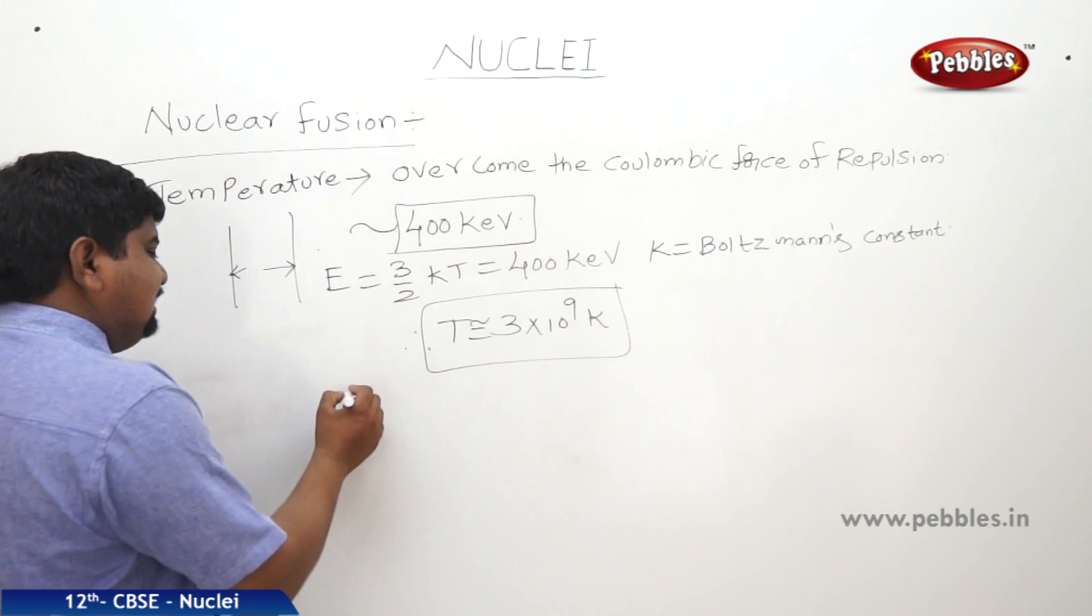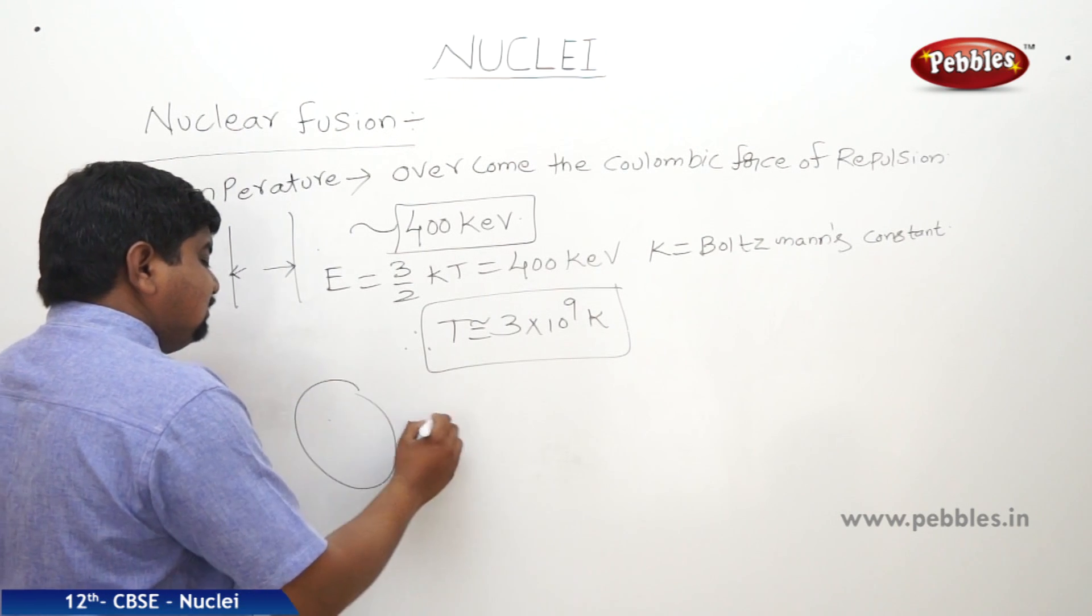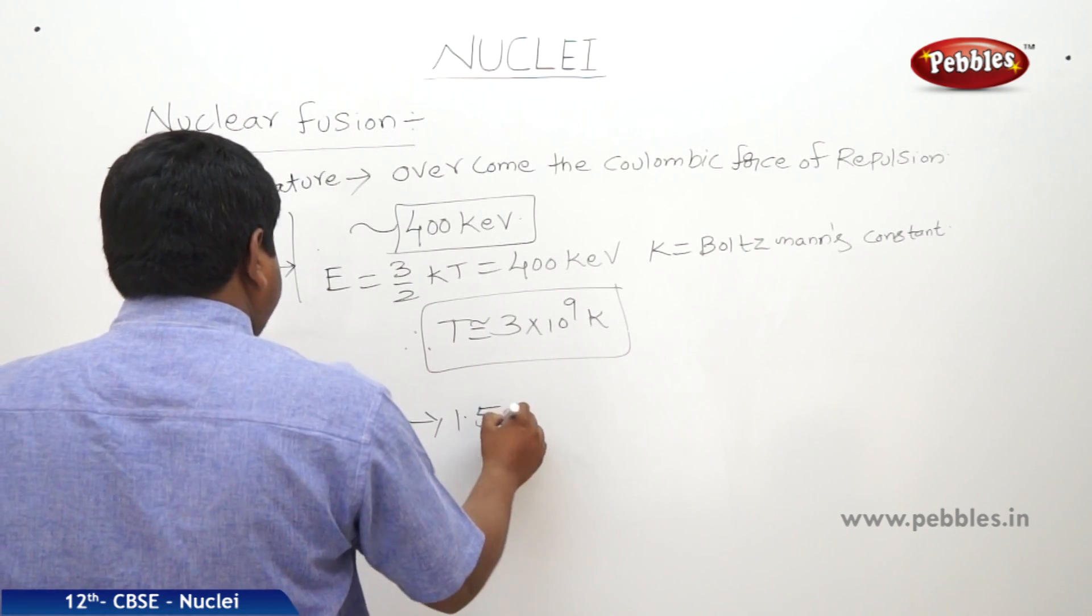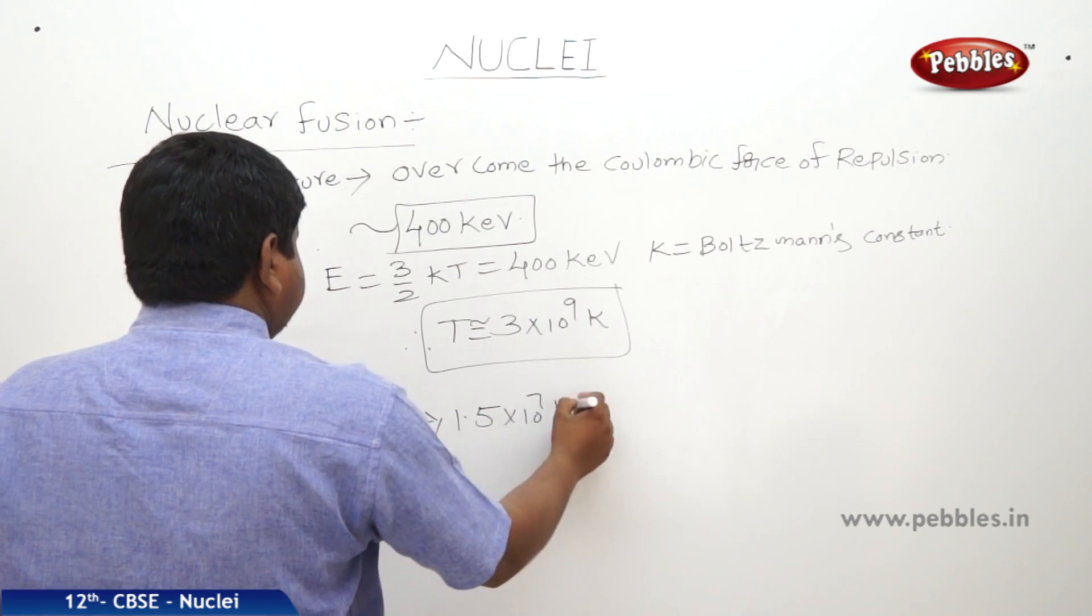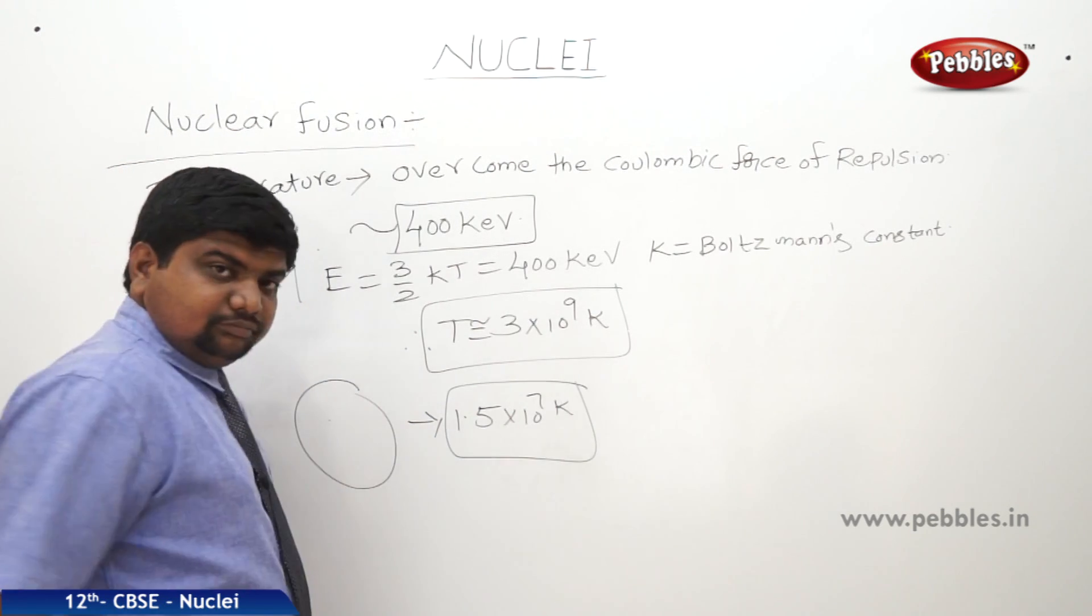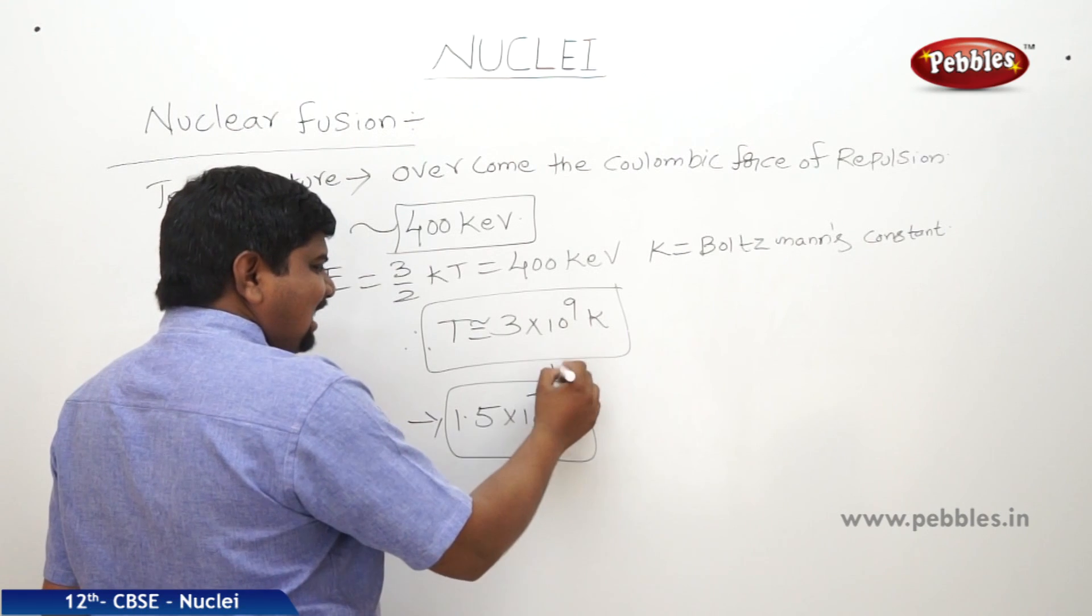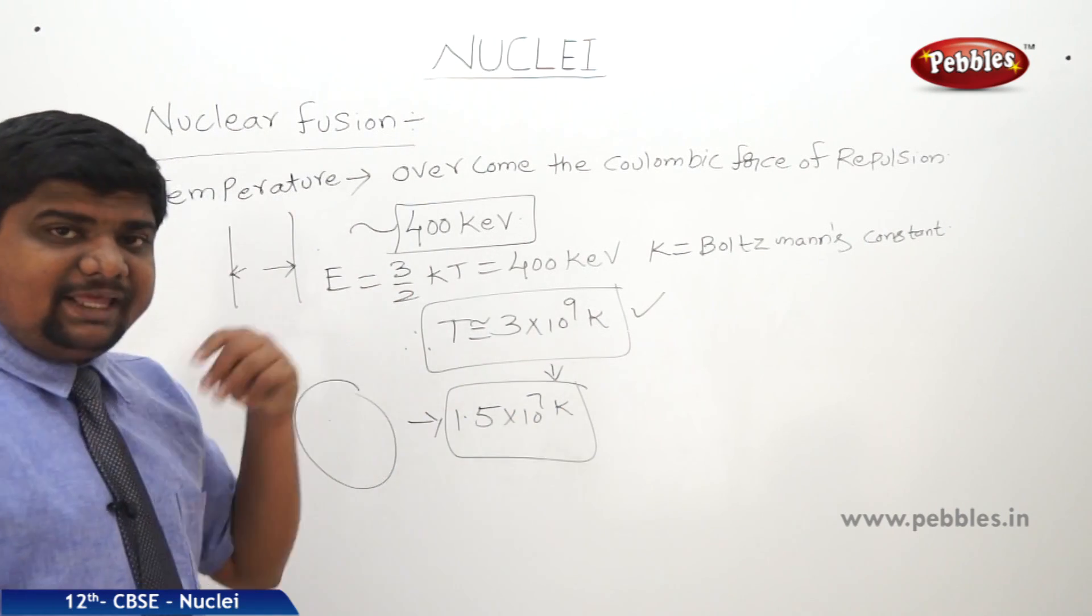But if you understood the inside temperature of the sun, this is approximately 1.5 x 10^7 Kelvin only, which is completely less than the temperature which is required to overcome the barrier.